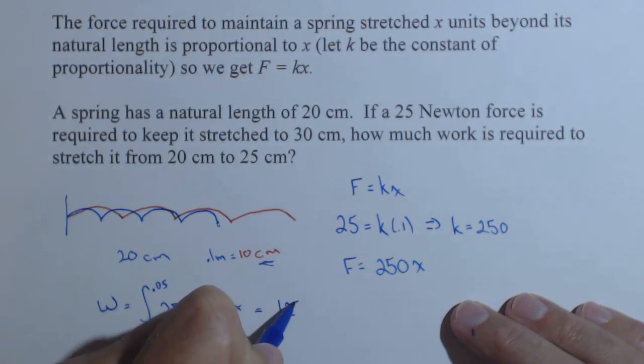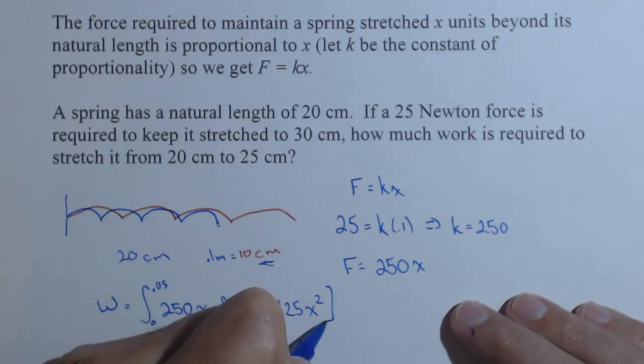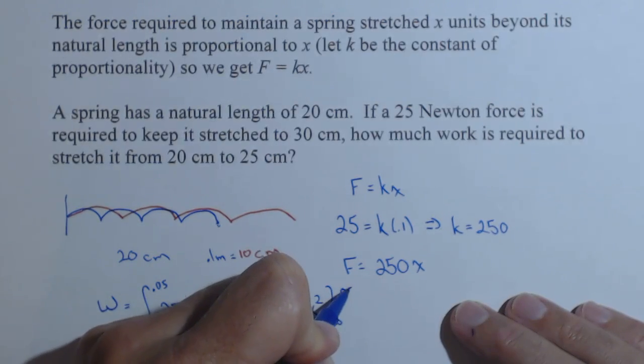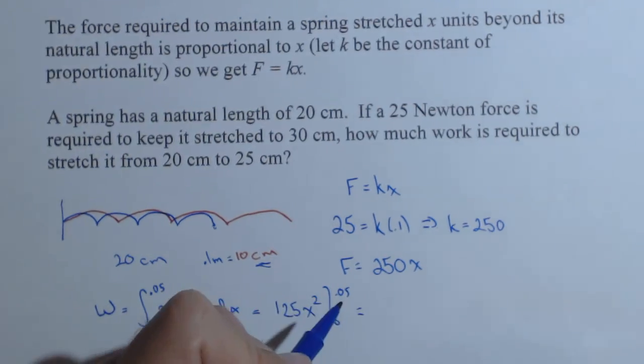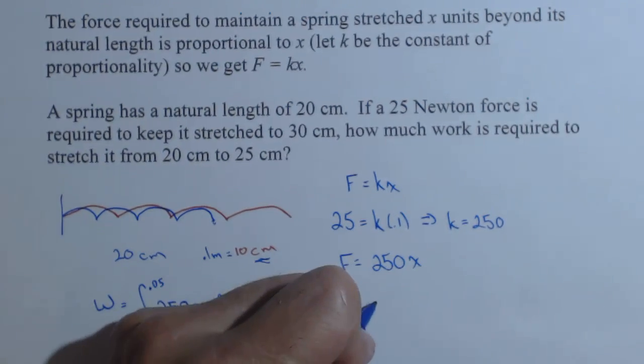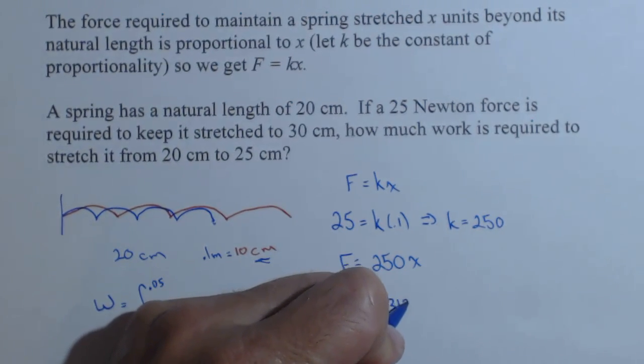So calculating this integral, we get 125x squared from zero to 0.05. And that comes out to be 0.3125.